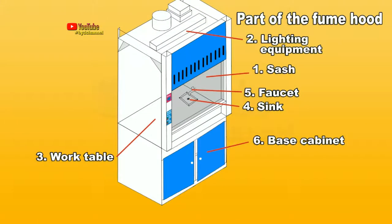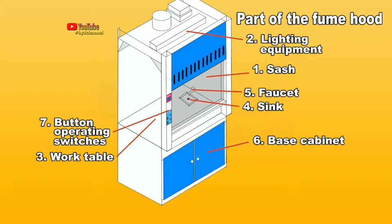Six: Base cabinet - storage cabinet for chemicals. Seven: Button operating switches, consisting of the on/off button, stop contact for lamp power. Eight: Side wall - wall surface resistant to steam and chemical spills.